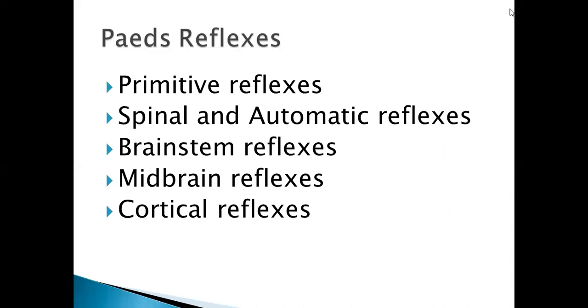After that, you have spinal reflexes. Spinal reflexes are of 3 types: flexor withdrawal reflex, extensor thrust and cross extension reflex. After that, you have automatic reflexes. Those are also 3 types: Gallant reflex, parachute reflex and Landau reflex.